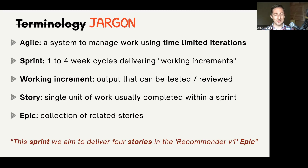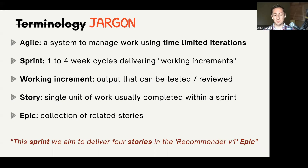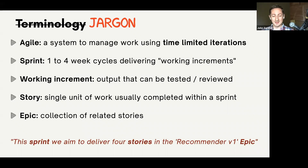What is this thing? Let's go through some terminology — there are a lot of buzzwords. Agile is just a system to manage your work using time-limited iterations called sprints — one, two, or four-week cycles. You're delivering working increments, meaning output that can be tested or reviewed. If you're building an ETL pipeline, by the end of that sprint, someone can review a partially working ETL pipeline. Or if it's an analysis, there's something reviewable and feedbackable. The whole idea is to get feedback from your stakeholders and managers sooner, because they might just flag something that puts a real spanner in the works.